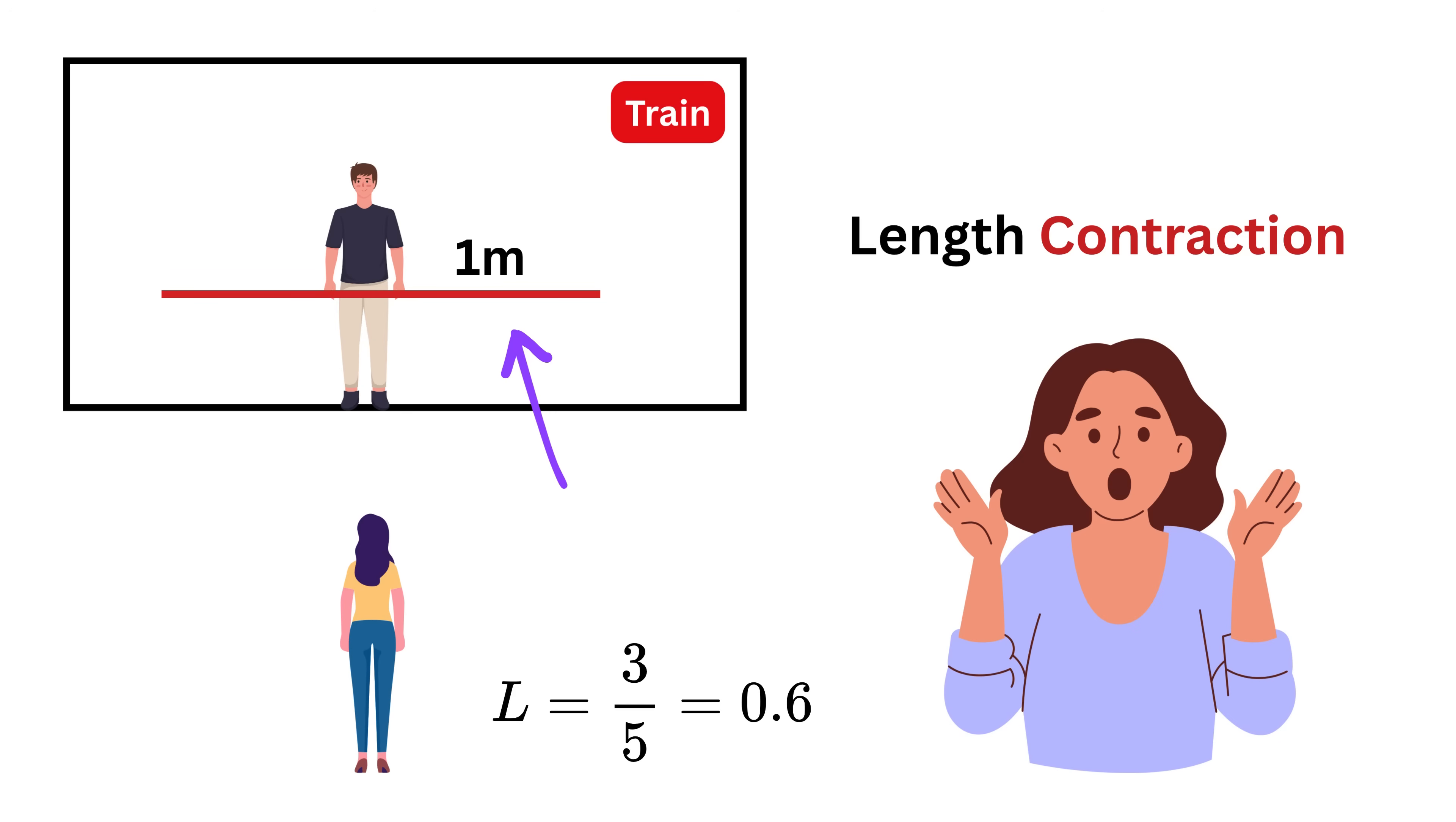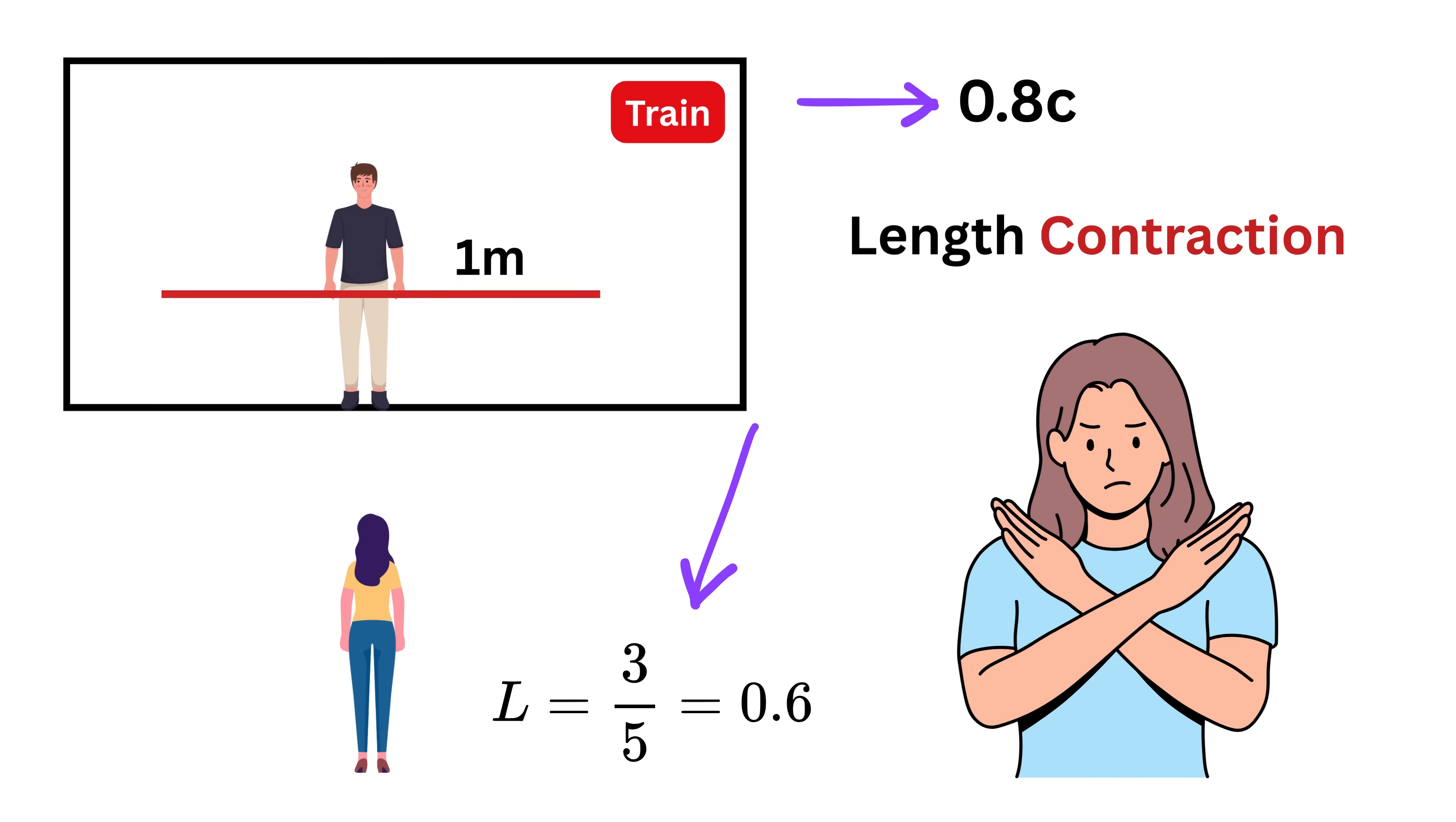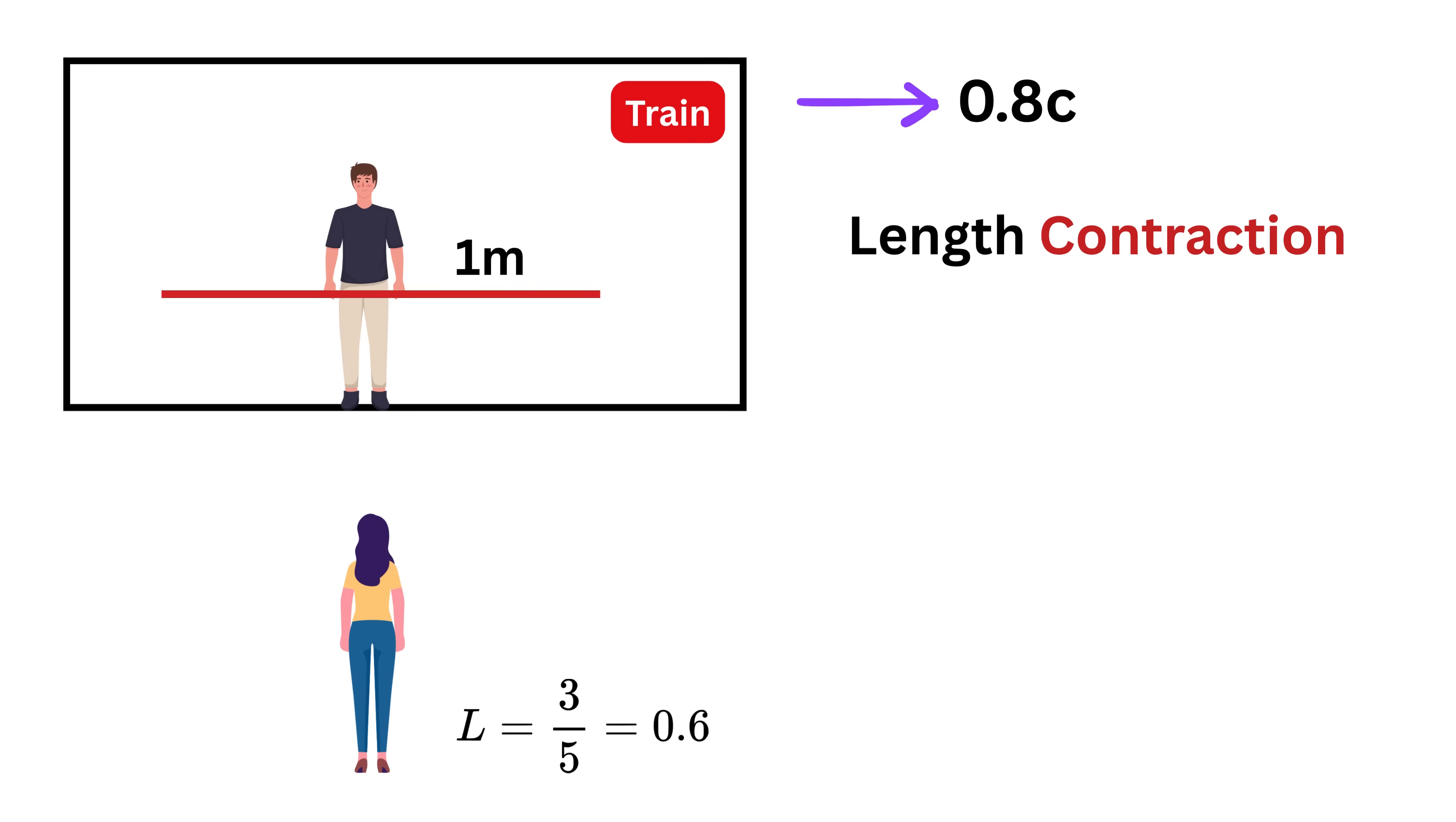Even though the pole is one meter long in its own rest frame, or the Bob's frame, it appears only 0.6 meters long to Alice because it's moving at a high speed relative to her. This isn't an illusion or a measurement error. It's a real physical prediction of how space and time behave at high speeds. The faster something moves relative to you, the shorter it gets along the direction of motion.